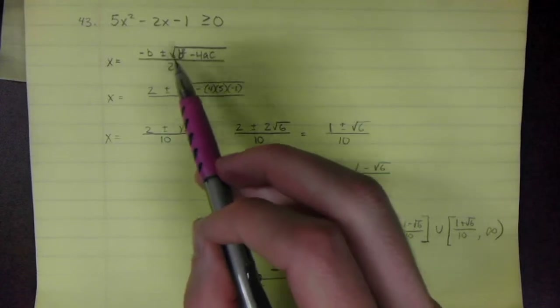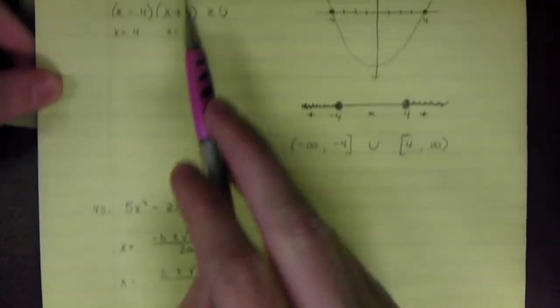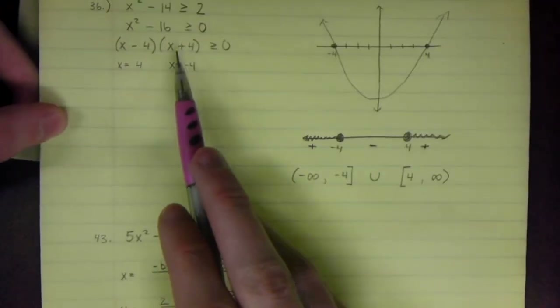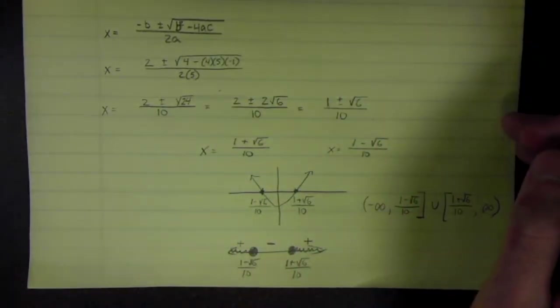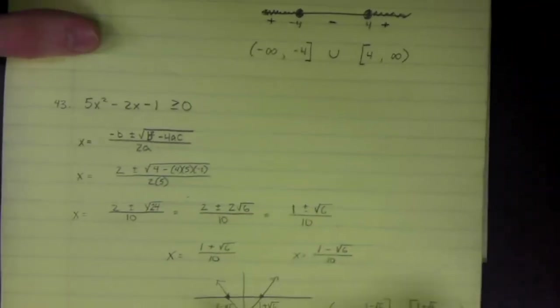The idea is: find the x-intercepts — either by factoring or using the quadratic formula — then sketch the graph to see where it's above or below the x-axis, depending on whether your inequality is greater than or less than. Let me show you one more thing you can do when the equation doesn't factor.